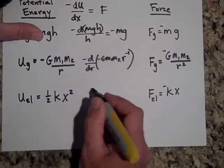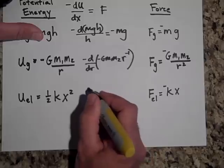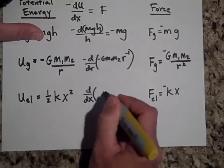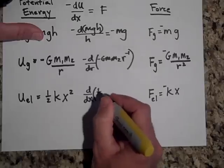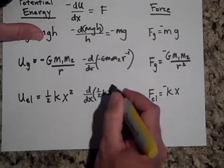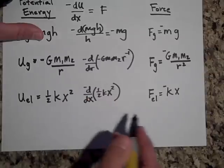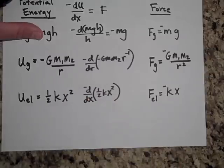One more time. If I take the derivative of this with respect to X, the derivative of one half KX squared with respect to X, the negative derivative, always the negative derivative. Notice that I get that over there.